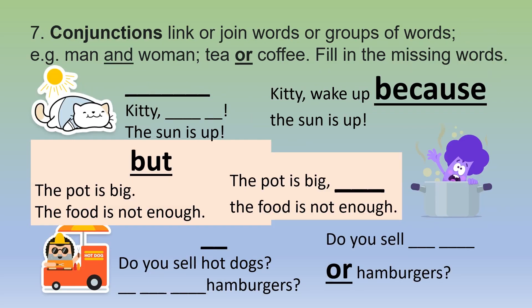Seven: conjunctions link or join words or groups of words. For example, man and woman; tea or coffee. Fill in the missing words — we have because, but, or. Kitty, wake up because the sun is up. The pot is big, but the food is not enough. Do you sell hot dogs or hamburgers?